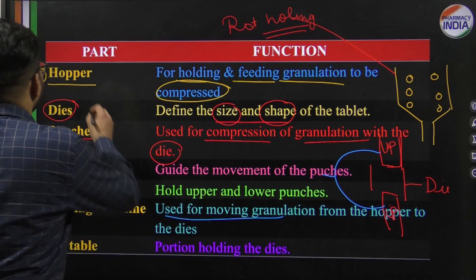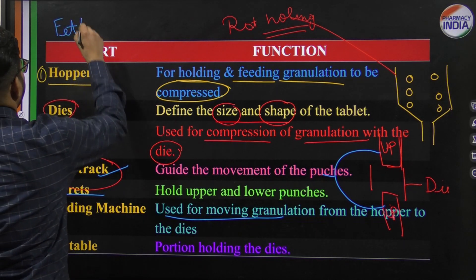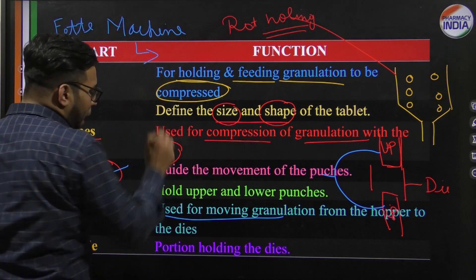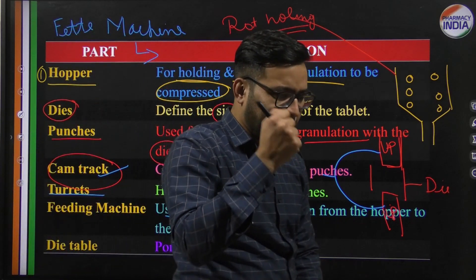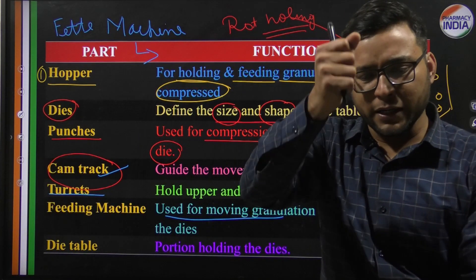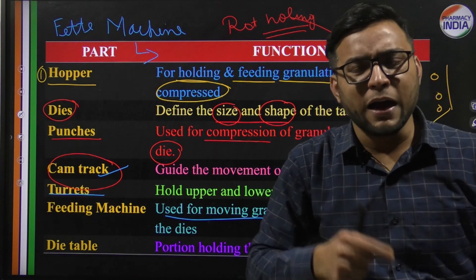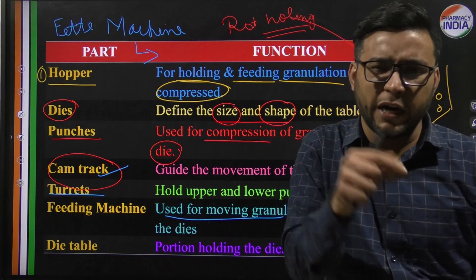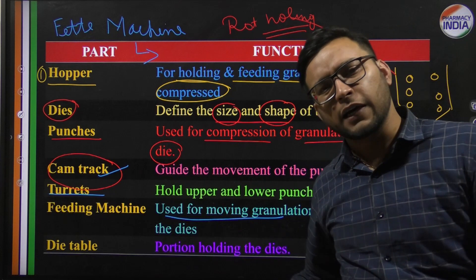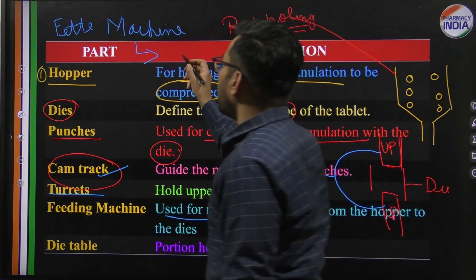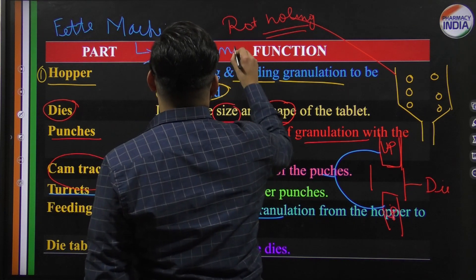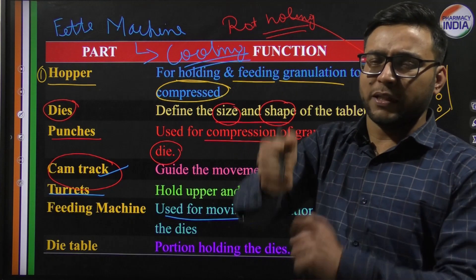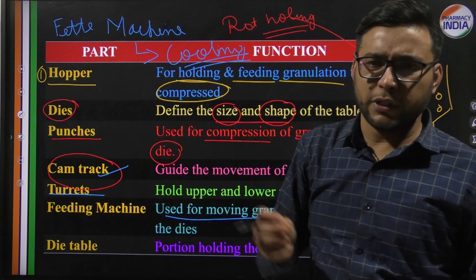An important point is the fat machine. When you compress the granules, heat is generated during compression. If some substances melt due to this heat, the fat machine provides cooling during compression to reduce friction and heat generated during the process.